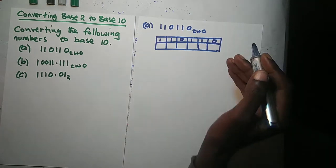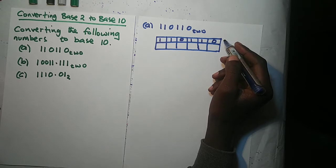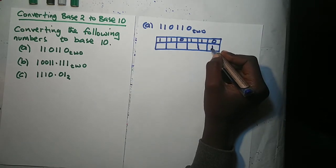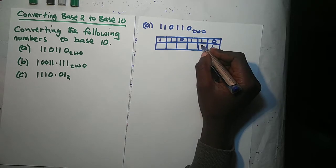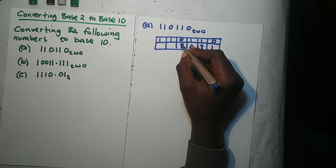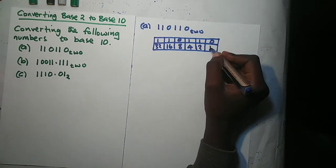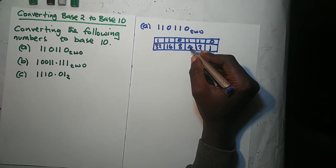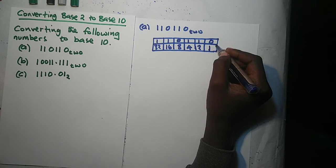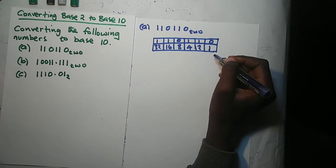Since we are converting from base 2, we multiply starting from the right-hand side by powers of 2. We start with 1 (which is 2 to the power 0), then 2, then 4, then 8, then 16, then 32. So the powers increase from right to left: 2⁰, 2¹, 2², 2³, 2⁴, 2⁵.